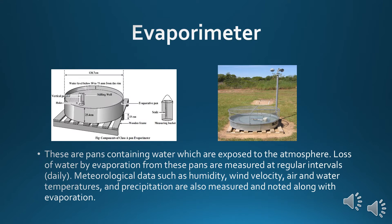Evaporimeters are pans containing water which are exposed to the atmosphere. Loss of water by evaporation from these pans is measured at regular intervals daily. Meteorological data such as humidity, wind velocity, air and water temperatures, and precipitation are also measured and noted along with evaporation.